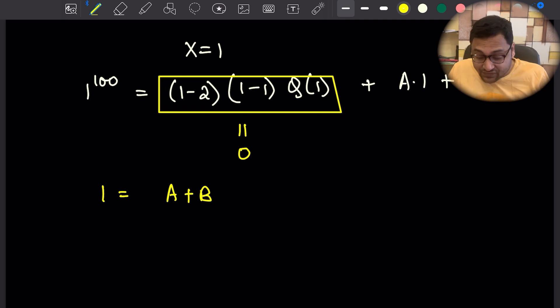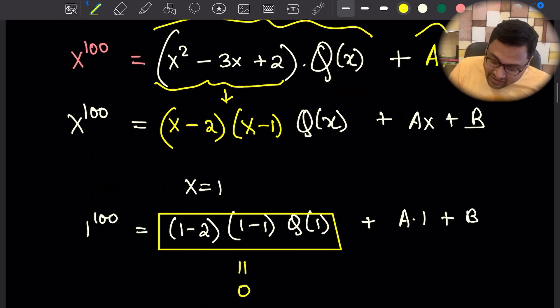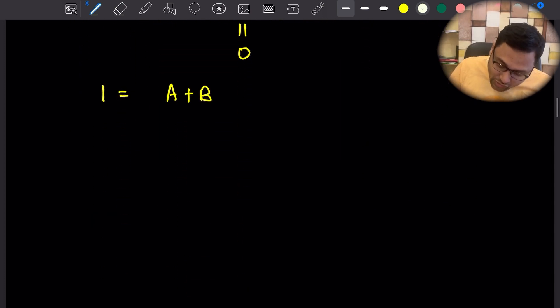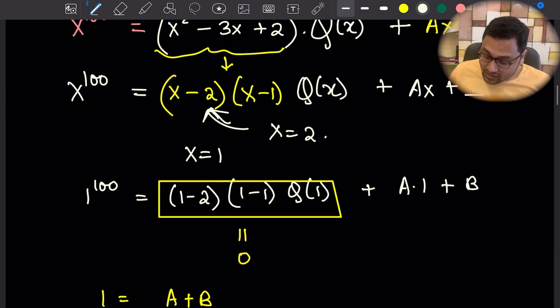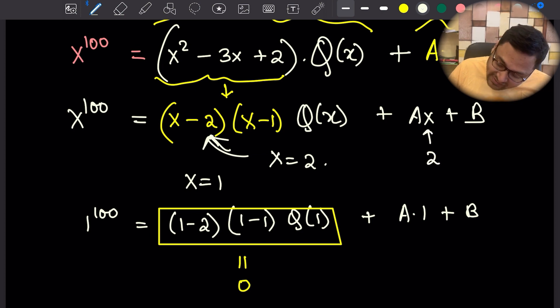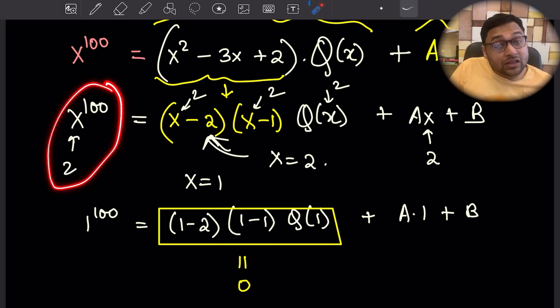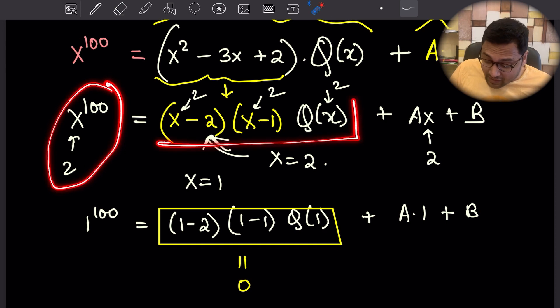We can now replace x by 2. Again, we will have 2 to the power 100 equals 2a plus b. If I replace every x by 2 here, we will have 2 to the power 100, this part will become 0, and this part will be 2a plus b.